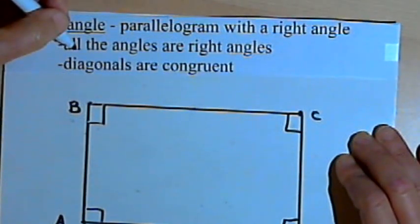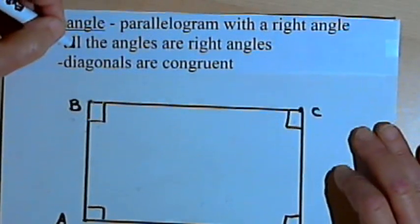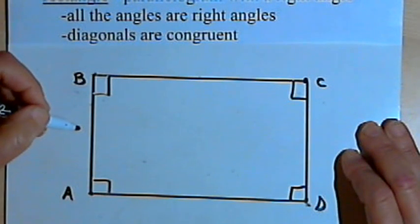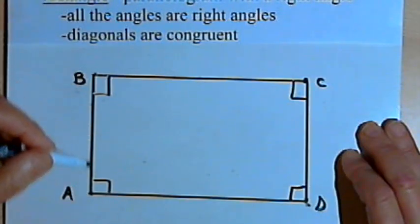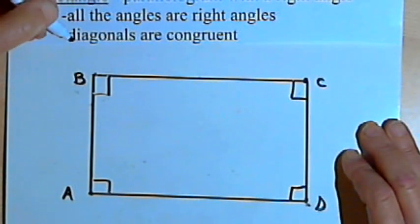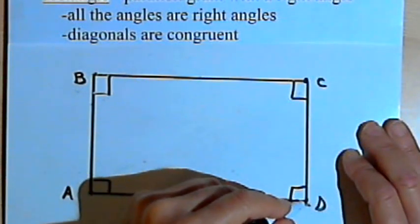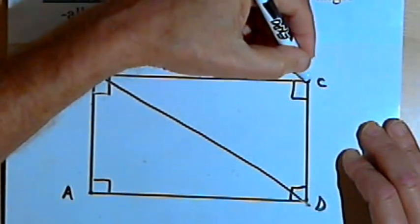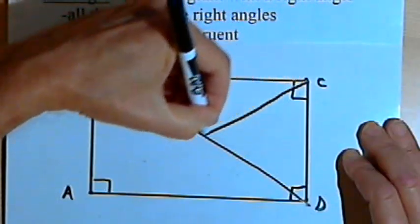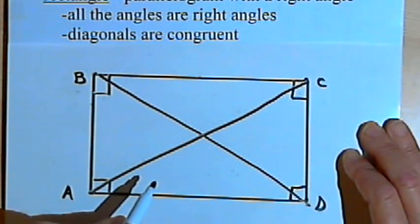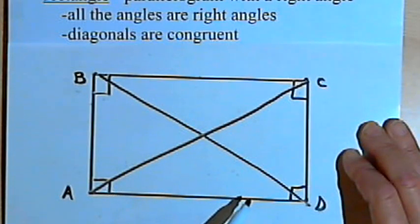The property that all angles are right angles is true of any rectangle, and a lot of times people say it's a parallelogram with four right angles. The second property says that the diagonals are congruent. Drawing in diagonals BD and AC, I want to show those two diagonals are the same length — that they're congruent.